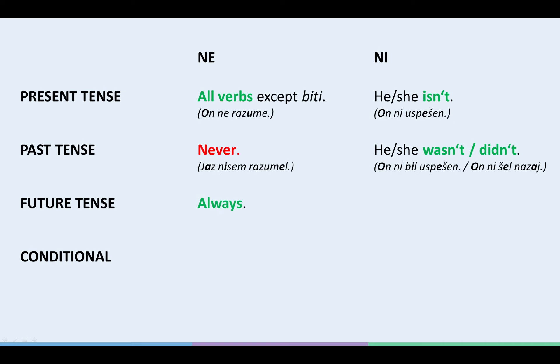Now, moving on to the future tense, we always use NE to negate the future tense, because the future tense of the verb TO BE, BOM, BOŠ, BO, and so on, is negated quite regularly, just like 99% of all other verbs, and that is with NE. For example, ON NE BO ŠEL NA ZABAVO. HE WON'T GO TO THE PARTY. And we never use NI in the future tense.